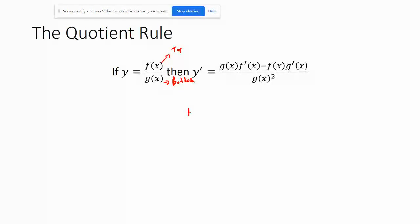So it is bottom top prime. So the bottom function is g of x, top function prime, minus top bottom prime. All over bottom squared. And guys, you're going to say this enough times that you will have this one memorized. And it's a really easy way to be able to remember what the quotient rule is.